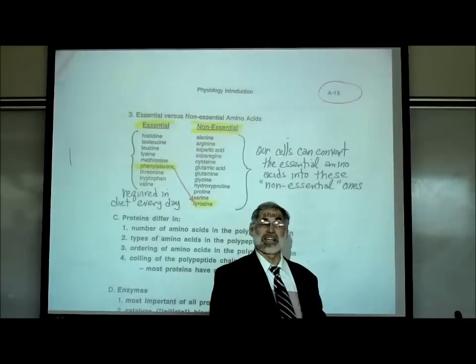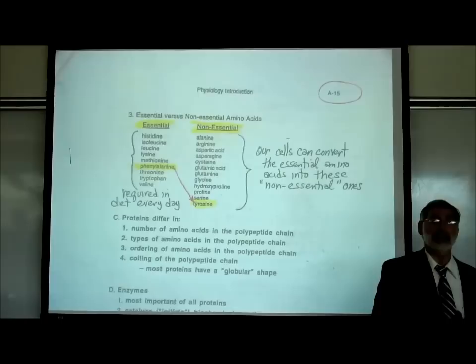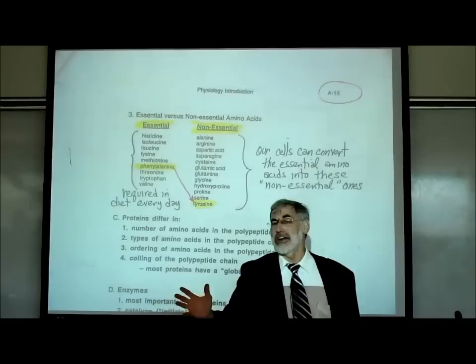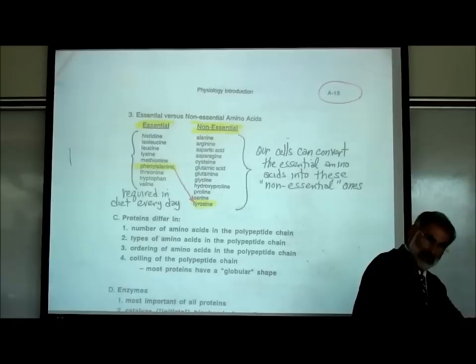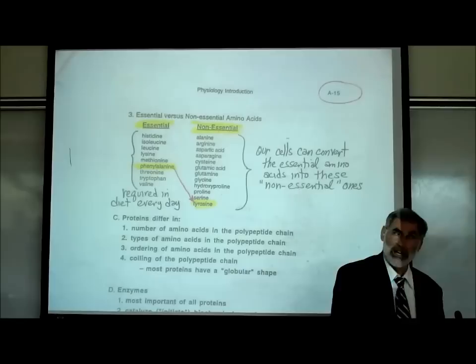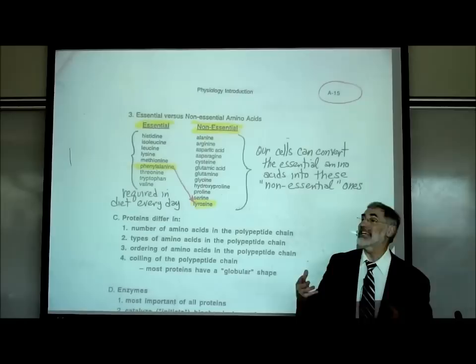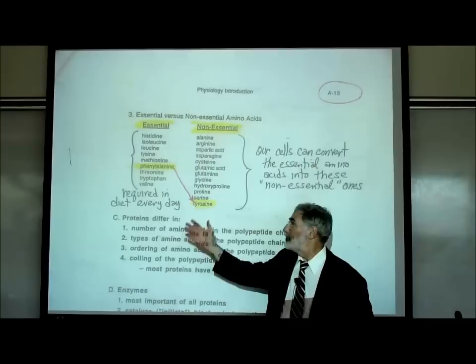When we eat food, our food contains carbs, fats, proteins, and nucleic acids — the four major types of organic compounds. When we eat proteins, our digestive system breaks carbs into monosaccharides, lipids into fatty acids, and proteins into amino acids. Those amino acids are what get absorbed into our body.